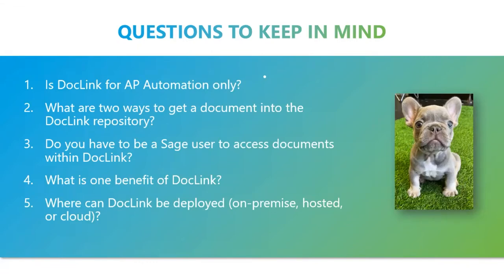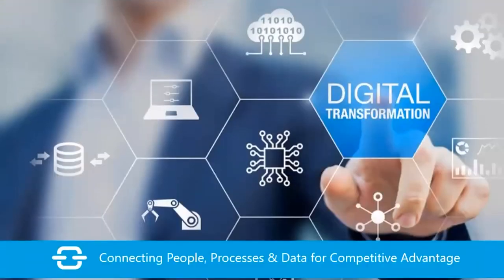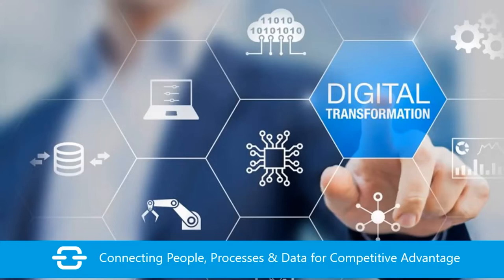As we all know, and why we're all here, is we're looking to automate as much as we can — and generally automation starts with AP. We've had this big shift over the last couple of years; COVID propelled it even faster. It's that digital transformation. For us and our product, it's really about connecting people, processes, and data for the competitive advantage, and DocLink can show you what this digital transformation looks like.